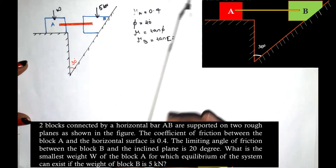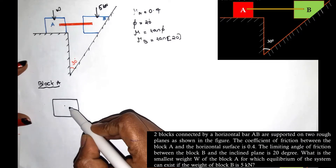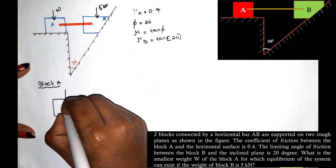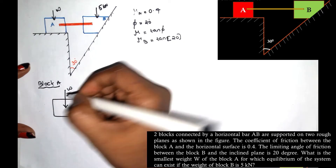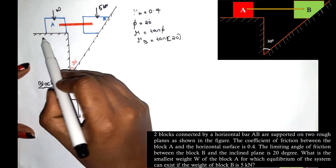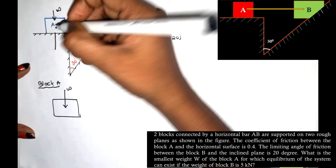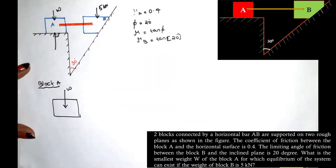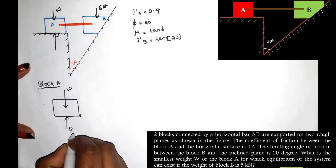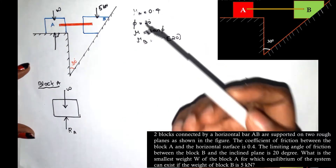We will start with a free body diagram. First, consider block A. We mark the weight W acting vertically downward. The normal reaction RA acts perpendicular to the horizontal surface.